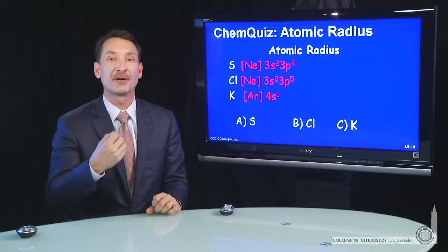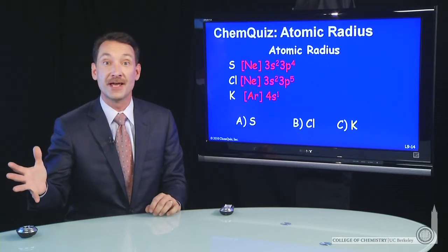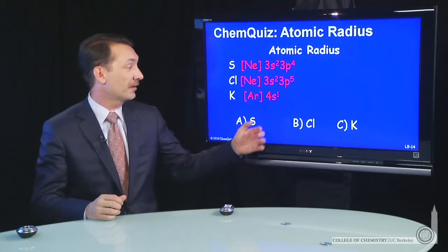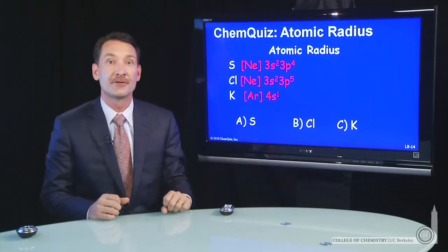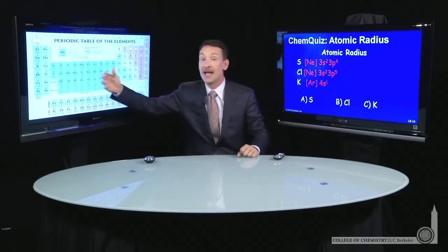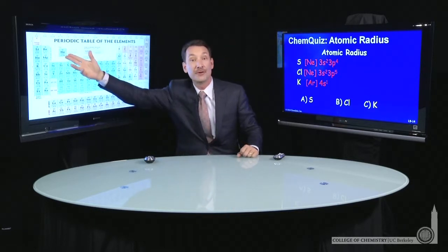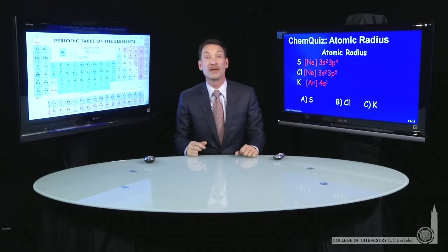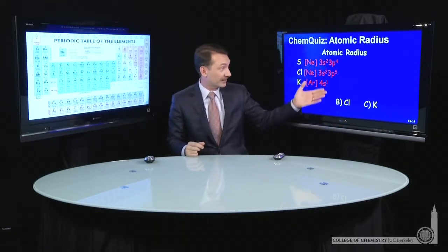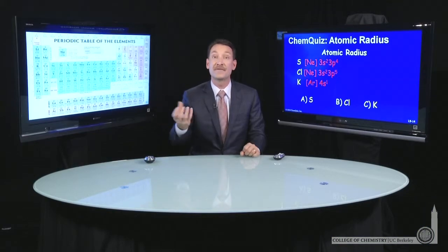We're trying to deduce atomic radius from other properties that have periodic trends that we understand. So we're taking sulfur, chlorine, and potassium — three atoms. On the periodic table they're arranged sulfur, chlorine, and potassium: sulfur and chlorine in principal quantum level three, potassium in principal quantum level four. And we have their exact electronic configurations here. What we want to do is decide how that electronic configuration and the periodic trends affect their radius.